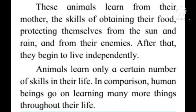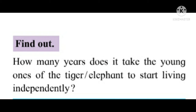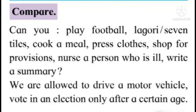Animals learn only a certain number of skills in their life. In comparison, human beings go on learning many more things throughout their life. Find out how many years it takes the young ones of the tiger and elephant to start living independently. Then compare: can you play football, cook a meal, press clothes, shop for provisions, nurse a sick person, write a summary? We are allowed to drive a motor vehicle and vote in an election only after a certain age.